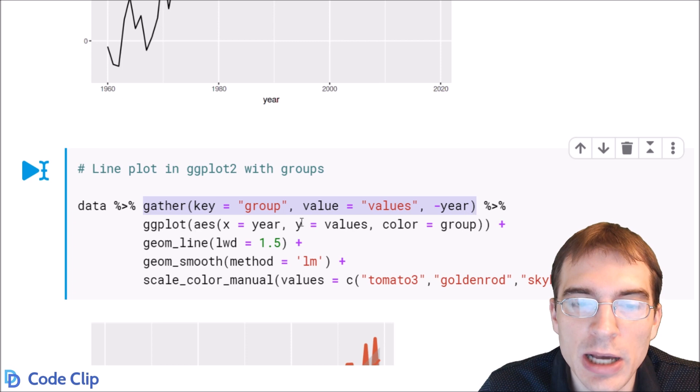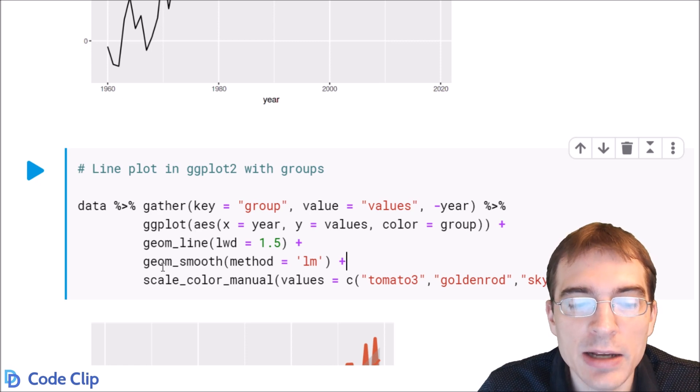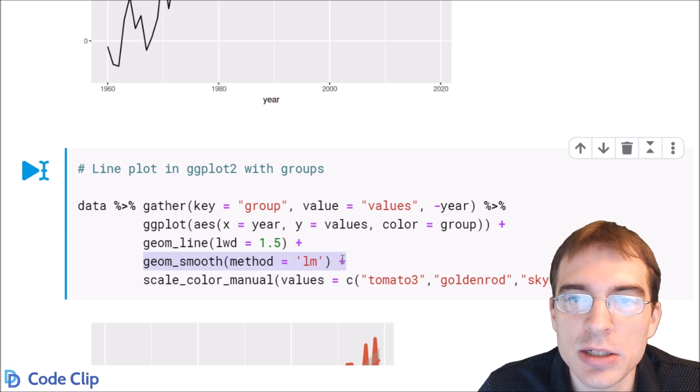Then we're going to plot those groups with ggplot so we're going to color by the groupings and we're also going to add in a geom_smooth that just creates a trend line essentially so you can see the general trend of the data.